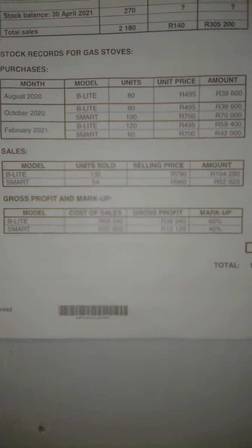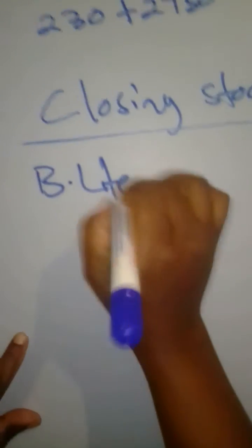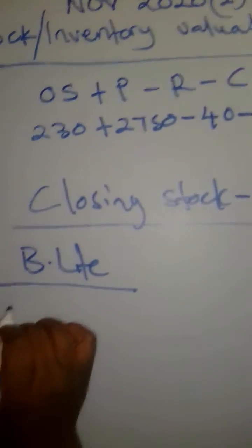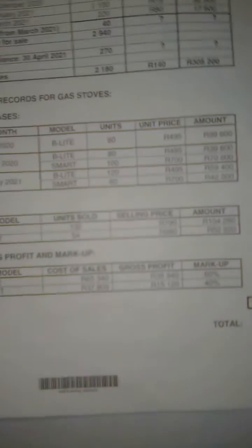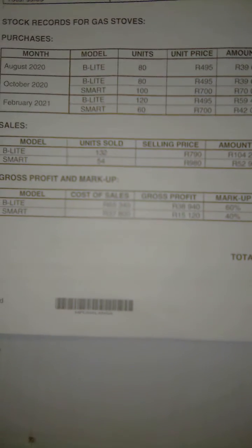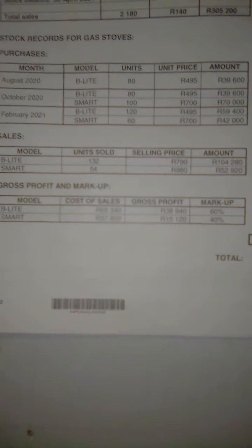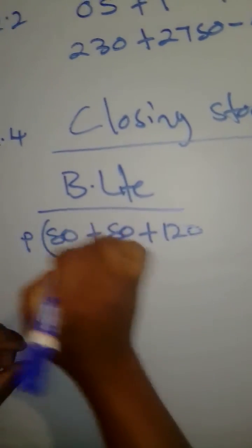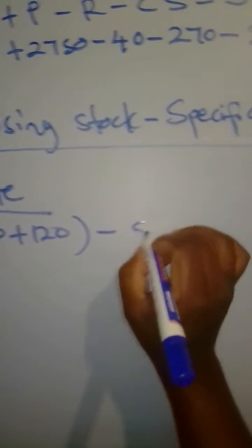We start by looking at the B-Light model. The purchases that took place: there were 80 purchases, plus 80 purchases in August, then 80 purchases in October, and then 120 purchases in February. So it's 80 plus 80 plus 120 — these are the purchases. Minus the sales.